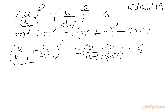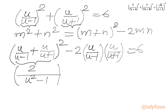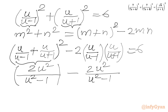We simplify the bracket by taking LCM. In the denominator we write (u−1)(u+1), applying the difference of two squares identity to get u²−1. In the numerator we get u²+u+u²−u, so the u terms cancel, giving 2u². Thus the bracket simplifies to 2u²/(u²−1), and our equation becomes 2u²/(u²−1) equal to 6, or minus 6 equal to 0.